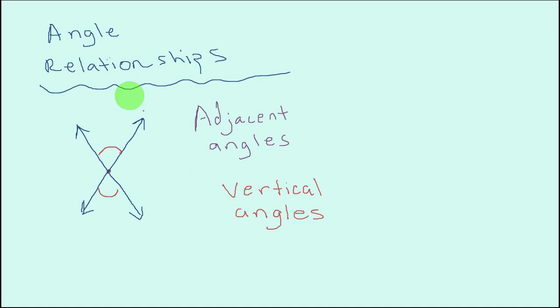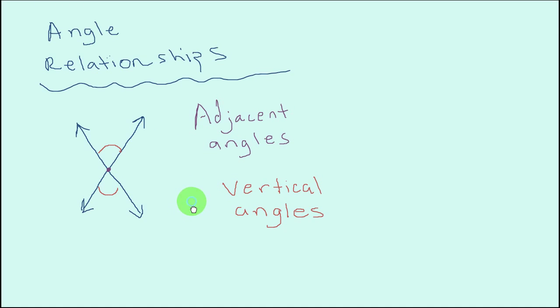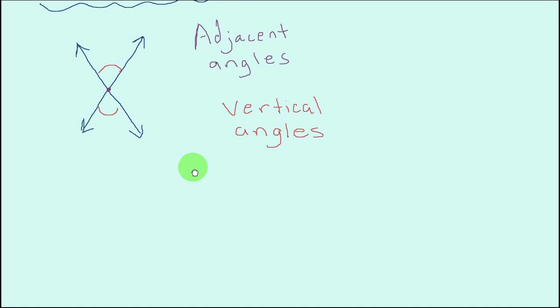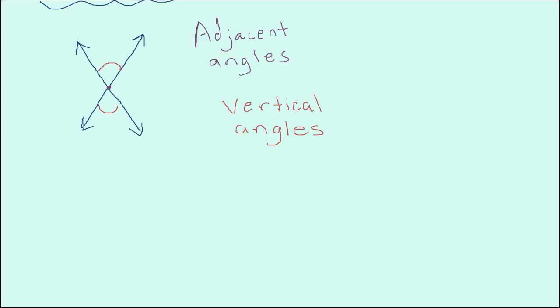But don't just take my word for it. Let's go ahead and prove it real quick. I'm going to make some more room on this screen and let's just start with the basic straight line. I'm going to draw as straight of a line as I can. And we know that straight lines create angle measures that are 180 degrees, and these are called straight angles.